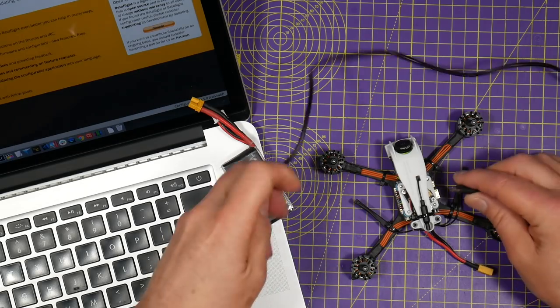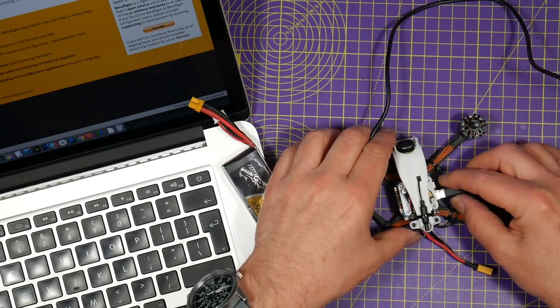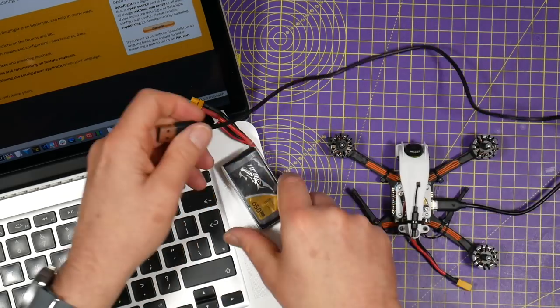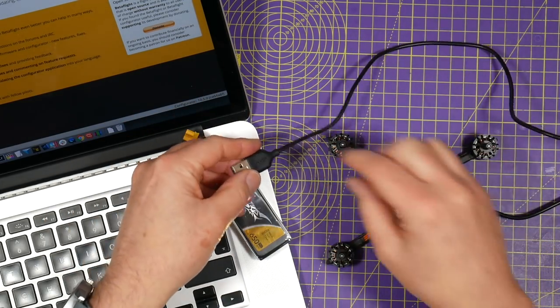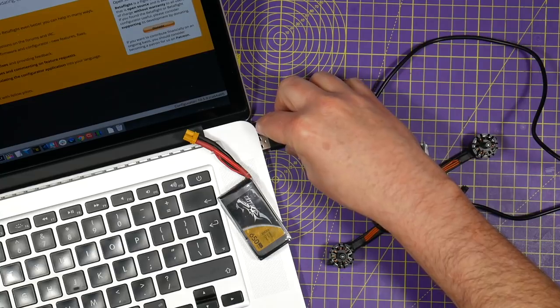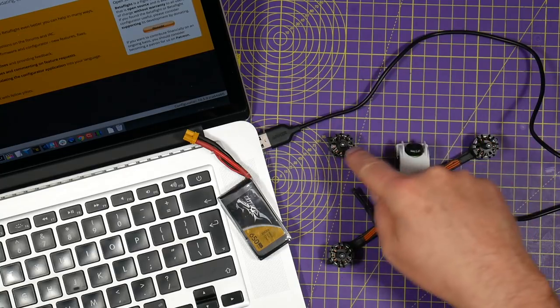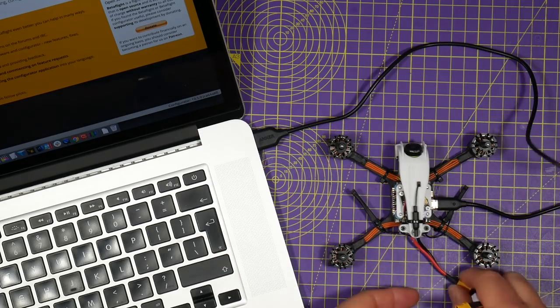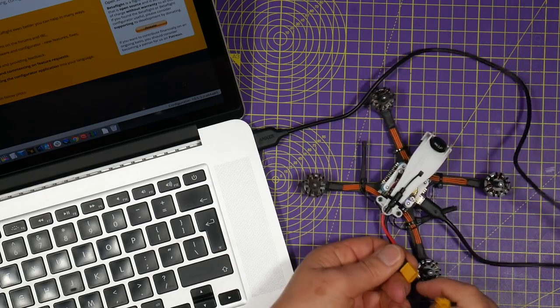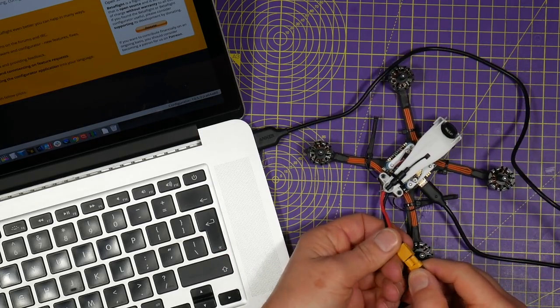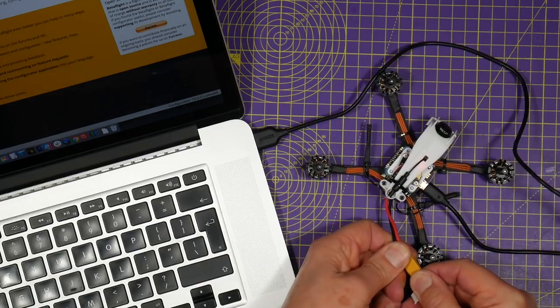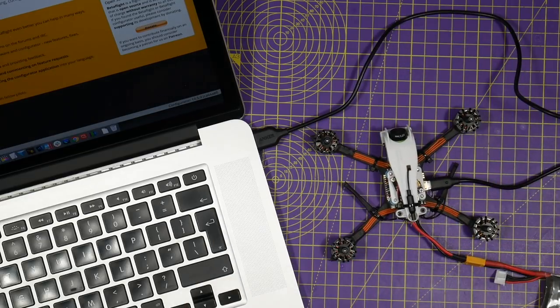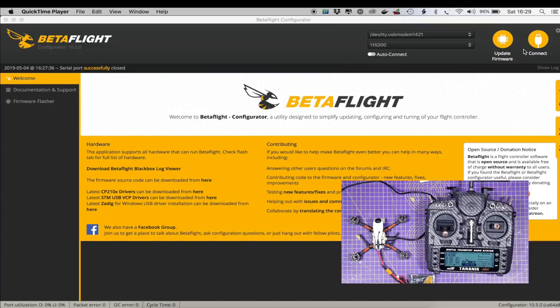So let's have a quick look at the Betaflight configuration, although there's not too much to set up on here. You will need a lipo to power the receiver on here, but that's not a problem. Make sure the props are off. So it's all plugged in and I've already checked there's no shorts across here so we can safely plug a battery in. Let's connect to the quad.